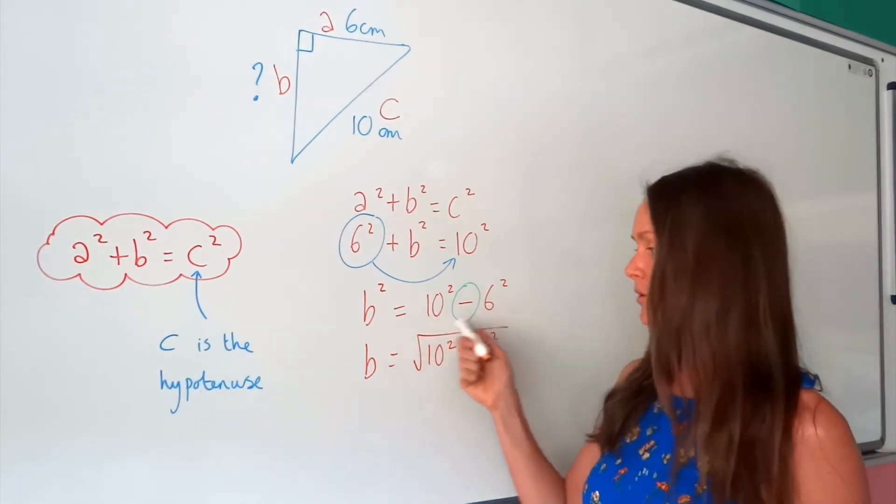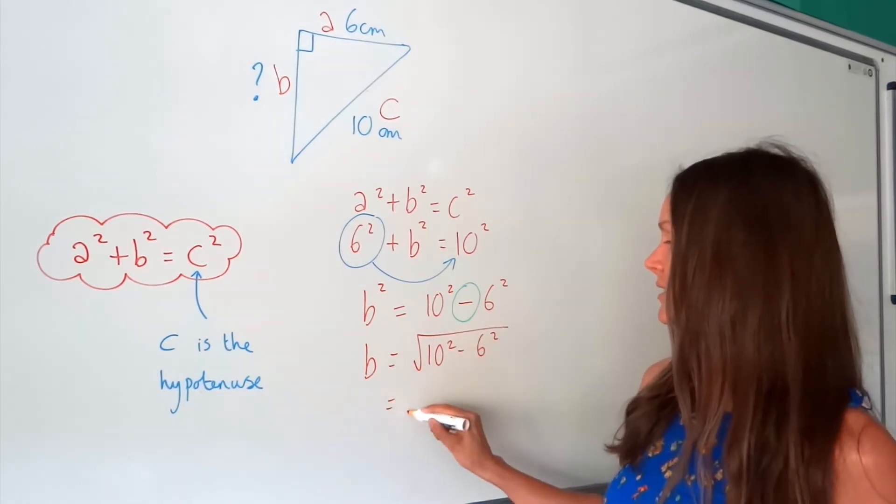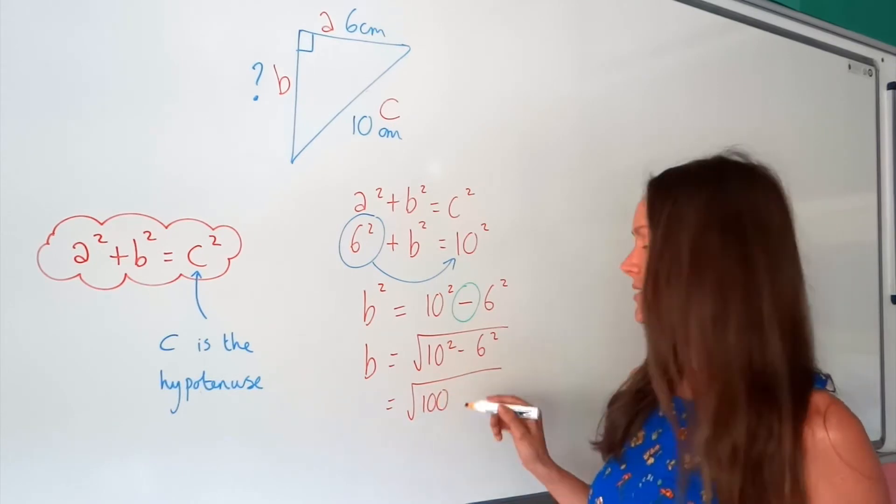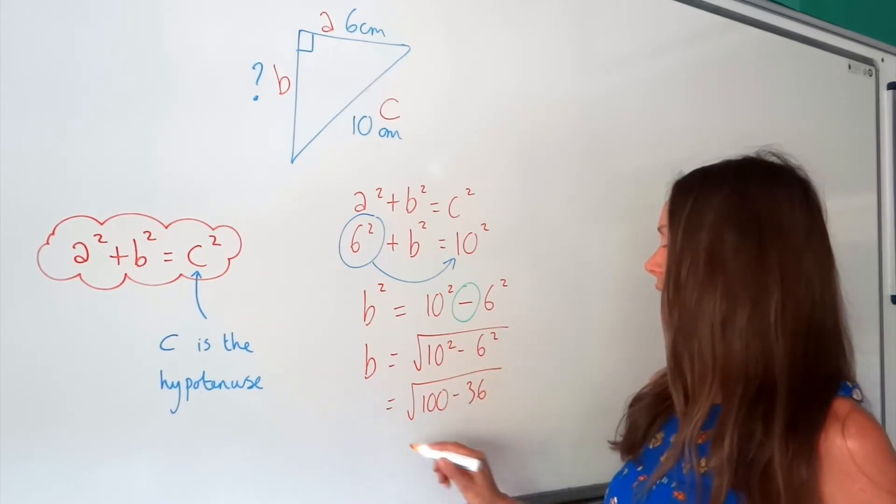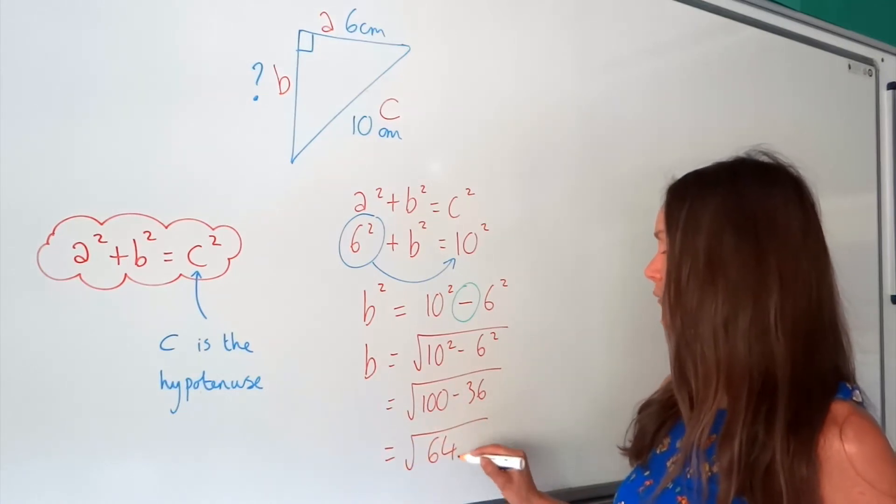Now, I can actually calculate what's inside this square root, so I'm going to do that as well. 10 squared is 10 times 10, which is 100. And 6 squared, 6 times 6, is 36. And I can work that out. 100 minus 36 is 64.